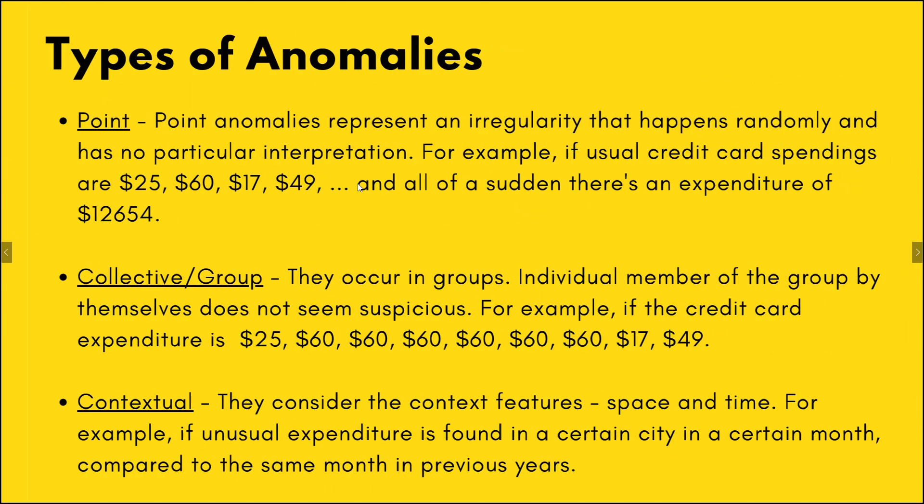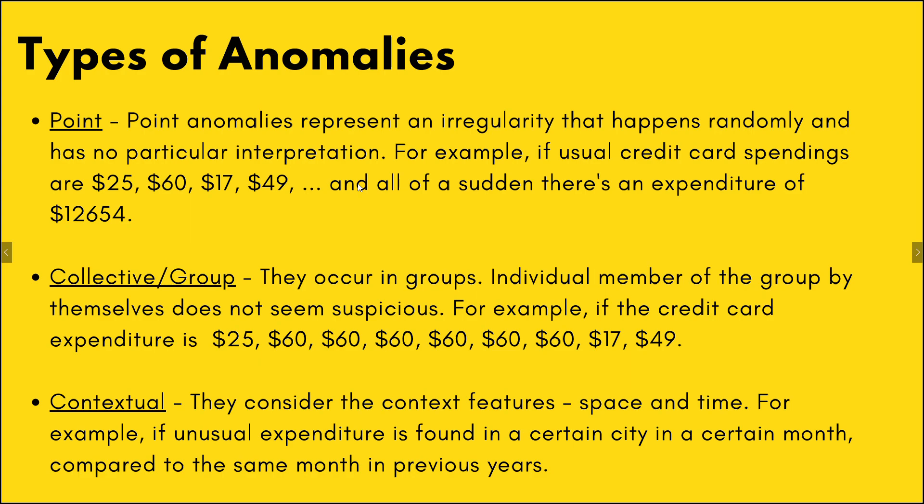There are three types of anomalies. First is the point anomaly. Let's say you have expenditures of $25, $60, $17, and $40, and all of a sudden there is an expenditure of $12,000 — so that is definitely an anomaly.